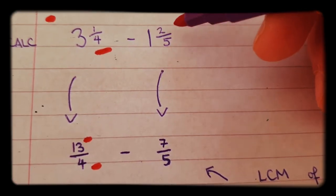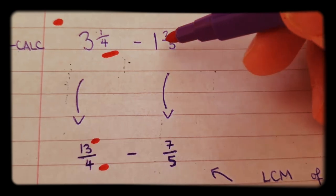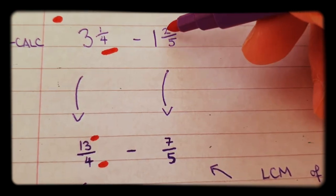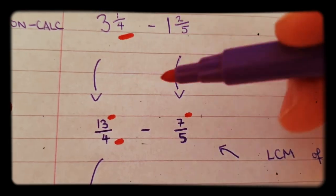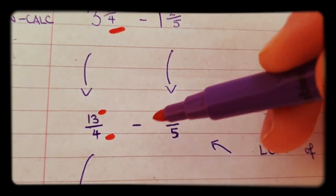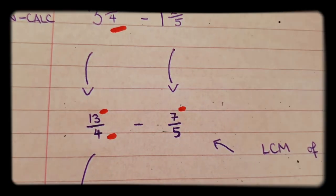And over here, we have one and two fifths. Again, one times five plus two makes seven. So it's seven over 5. We've now rewritten this as 13 over 4 minus 7 over 5.